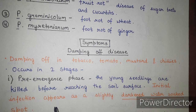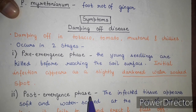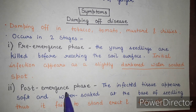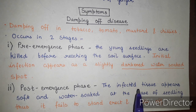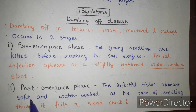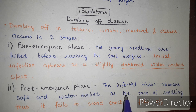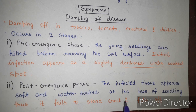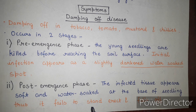The post-emergence phase is when the seedlings have come up on the ground. The infected tissue appears soft and water-soaked at the base of the seedling, due to which the seedling fails to stand erect and falls. That is why this disease is called damping-off disease — because the seedling fails to stand erect due to Pythium infection and falls down.